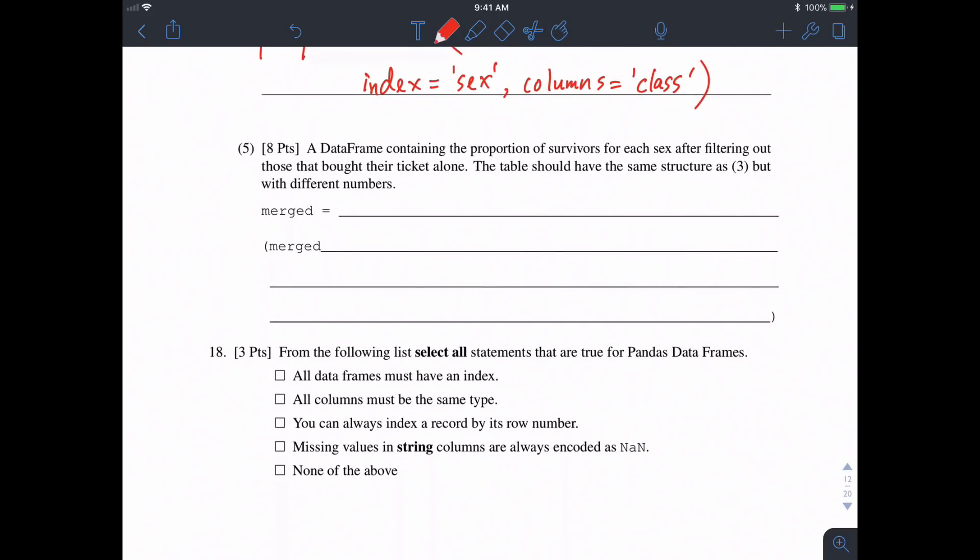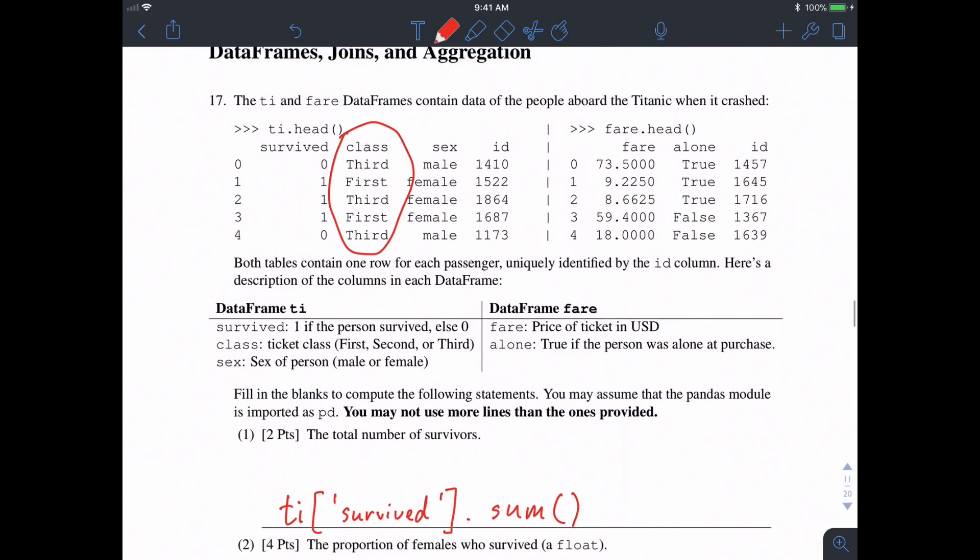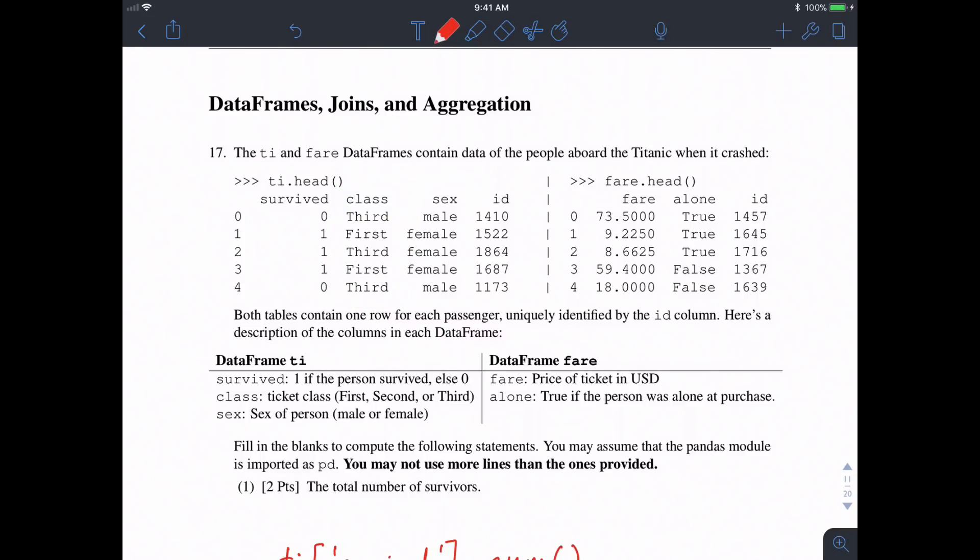And now, in part five, we're asked to create a data frame containing the proportion of survivors for each sex, after filtering out those that bought their ticket alone. So the table should be similar to the one that we had in three, but different numbers. Here, we're sort of told that our table should be called merge, so we know we're probably going to have to merge two tables. The only two tables we have are TI and fair. What are we going to merge them on? Well, probably the ID, because passengers are uniquely identified by ID. So we can merge these on the ID column, and then look only where the alone column is equal to true. And then we can do the exact same thing we did in part three, where we took only the survived and sex columns and then grouped by sex and took the mean.